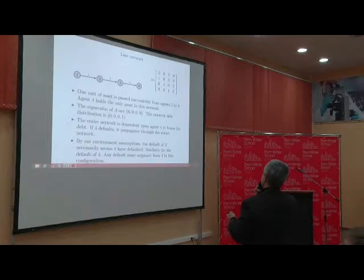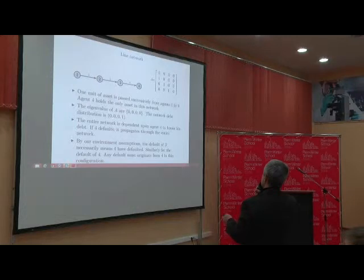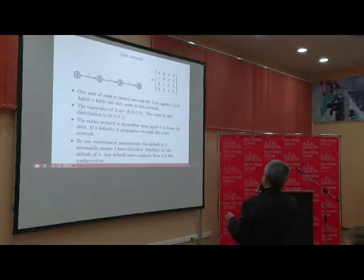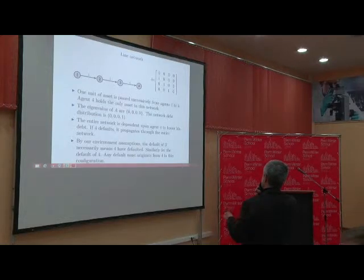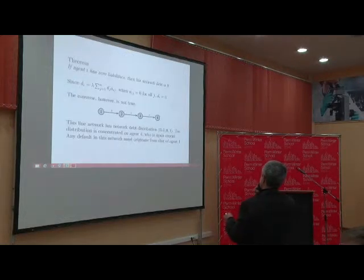If it is a line network, here is the adjacency matrix, these are your eigenvalues, and this is your network debt distribution. It sums to one. It tells you that the first agent is the most vulnerable — if that agent goes, the risk originates from that particular person in this setting.